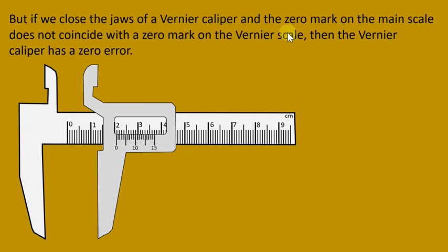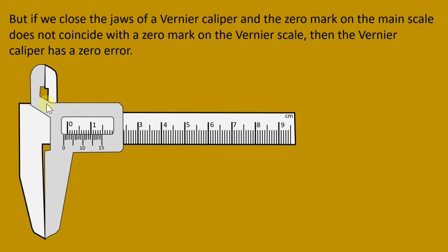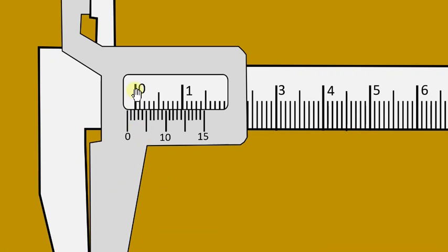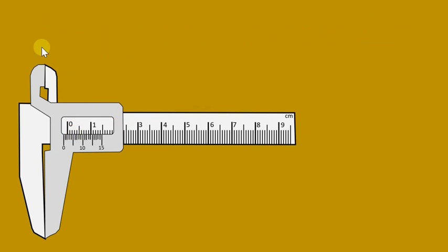But if we close the jaws of a Vernier caliper and the zero mark on the main scale does not coincide with the zero mark on the Vernier scale, then the Vernier caliper has a zero error. As you can see here, this zero mark of the main scale is not coinciding with the zero mark of the Vernier scale, meaning that this Vernier caliper has a zero error.